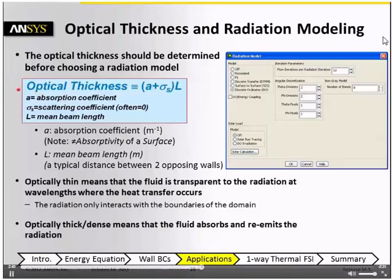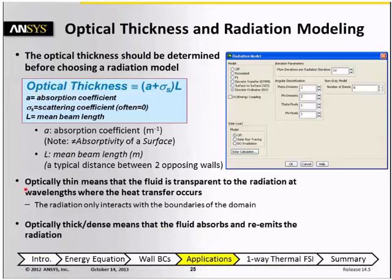If the optical thickness is zero or low, then we say that the system is optically thin. That means the fluid is transparent to the radiation at the wavelengths where the heat transfer occurs, and radiation only interacts with the boundaries of the domain. A good example of an optically thin fluid is air, which doesn't participate in radiation.